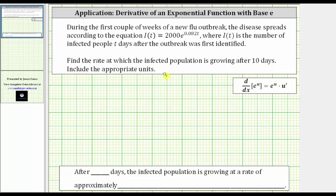Because we're looking for the rate of growth after 10 days, we need to find the derivative of I(t), or I'(t). Notice I(t) is an exponential function with base e, and because the exponent is not just t, we will need to apply the chain rule, which is built into the derivative formula here, where the derivative of e^u with respect to x equals e^u times u'.